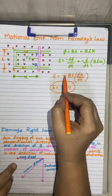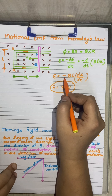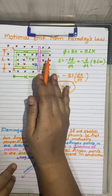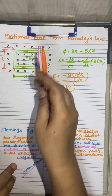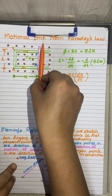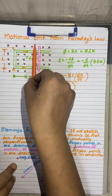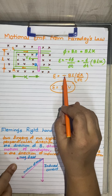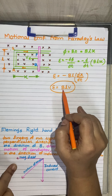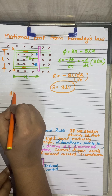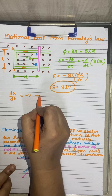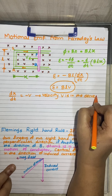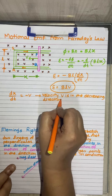Why is E = BLV and where did the negative sign go? We set dX/dt = −V because the velocity V is in the decreasing direction of X — as the rod moves inward, X decreases. So dX/dt is negative, written as −V. This negative sign cancels with the negative from Faraday's law, giving E = BLV.